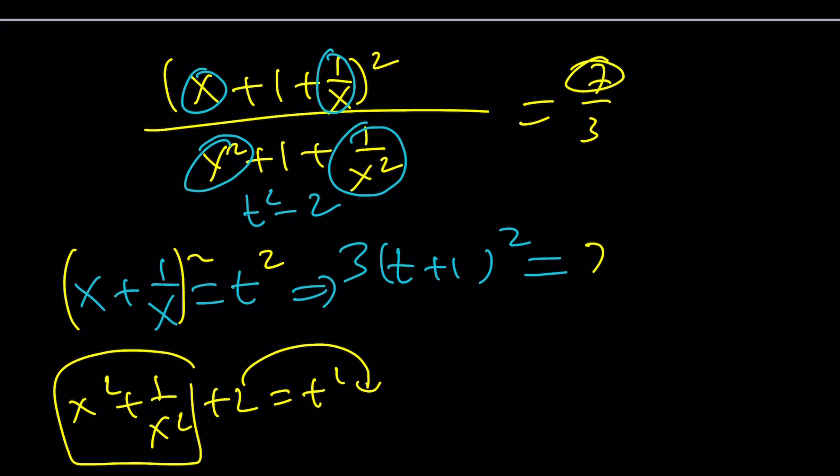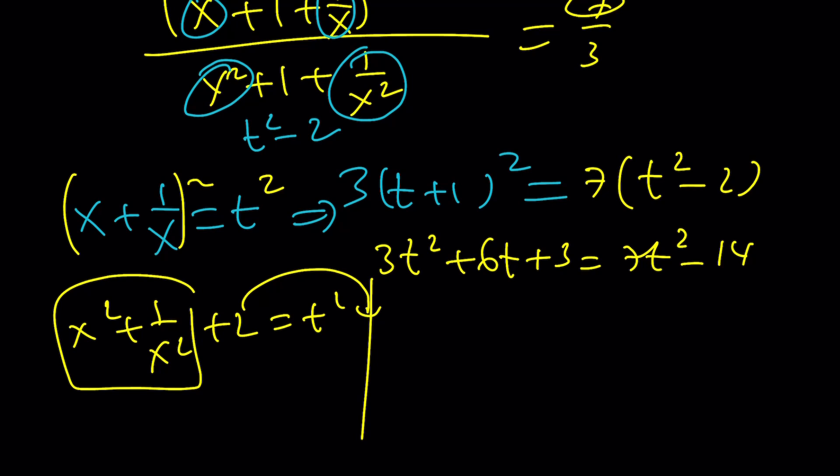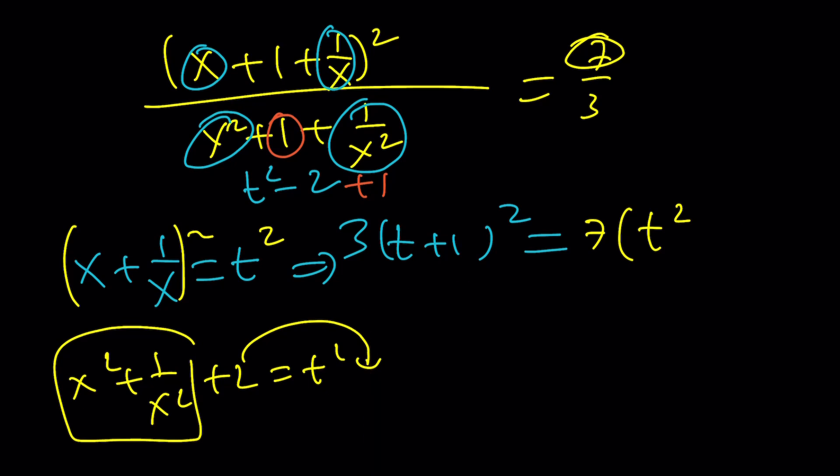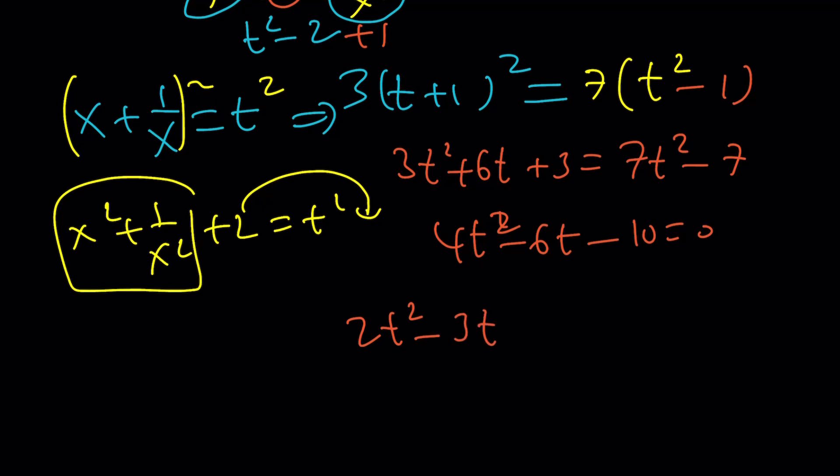And that will be multiplied by 7, 7 times t squared minus 2. If you go ahead and distribute this, you're going to get 3t squared plus 6t plus 3 equals 7t squared minus 14. Now, we multiply 3 by t plus 1 squared and 7 by t squared. Actually, we forgot one thing. Sorry about that. This is t squared minus 2 plus 1. I forgot to add this one here. It's going to be t squared minus 1. And that's definitely going to make a huge difference. Let's go ahead and erase this. It doesn't look good anyways. So this is going to be minus 1. And we're going to get 3t squared plus 6t plus 3 equals 7t squared minus 7. And then 4t squared minus 6t minus 10 equals 0.